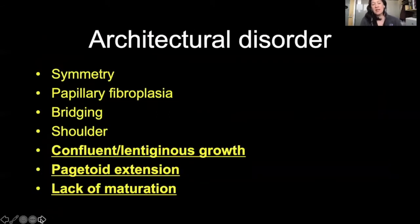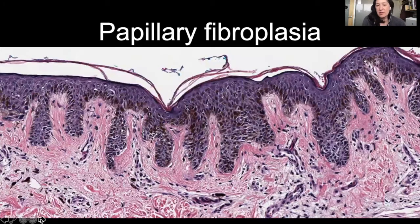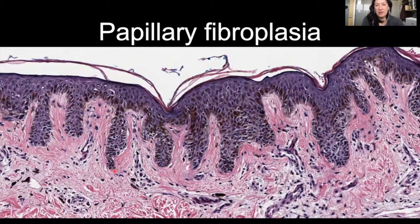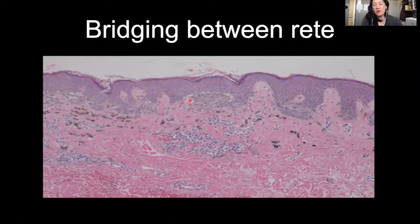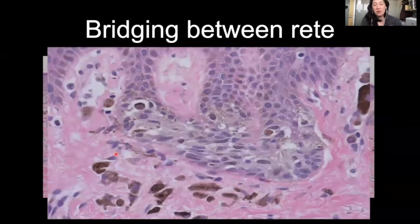Symmetry — two halves not being the same. Papillary fibroplasia is thickening of the collagen in the superficial papillary dermis, right under those rete ridges. You can see it visible on H&E — you don't need special stains, just that thick, wiry collagen. Bridging between rete ridges is where you get joining together of adjacent rete ridges with atypical melanocytic nests. You can have even horizontal nesting. Here's a closer look at that.